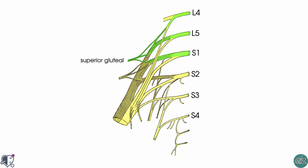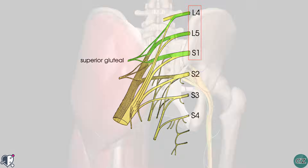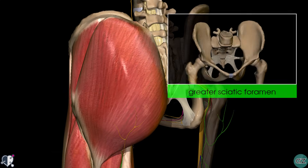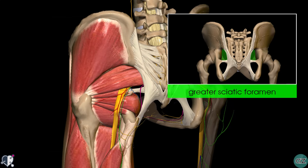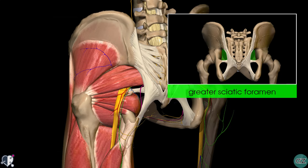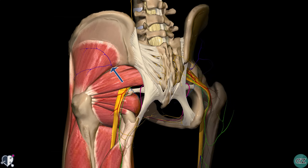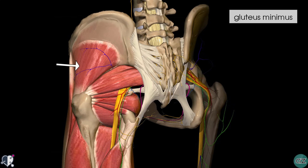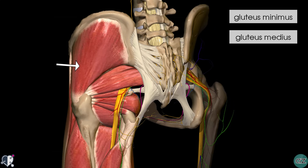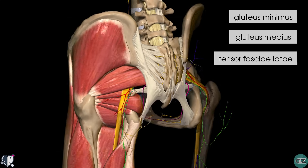The superior gluteal nerve originates from nerve roots L4, L5 and S1. It leaves the pelvis via the greater sciatic foramen, entering the gluteal region superiorly to the piriformis muscle. I've removed the gluteus maximus and the gluteus medius so that you can see this nerve here. It is accompanied by the superior gluteal artery and vein for much of its course. In terms of motor function, it innervates the gluteus minimus, the gluteus medius, and the tensor fasciae latae.